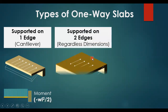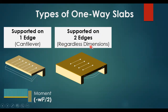One-way slabs can also be supported on two edges — it could be two beams or two walls. In this case it will be classified as one-way slabs regardless of the dimensions. So even if one dimension is greater than the other, it is still a one-way slab and the loads will go to the two beams or the two edges.